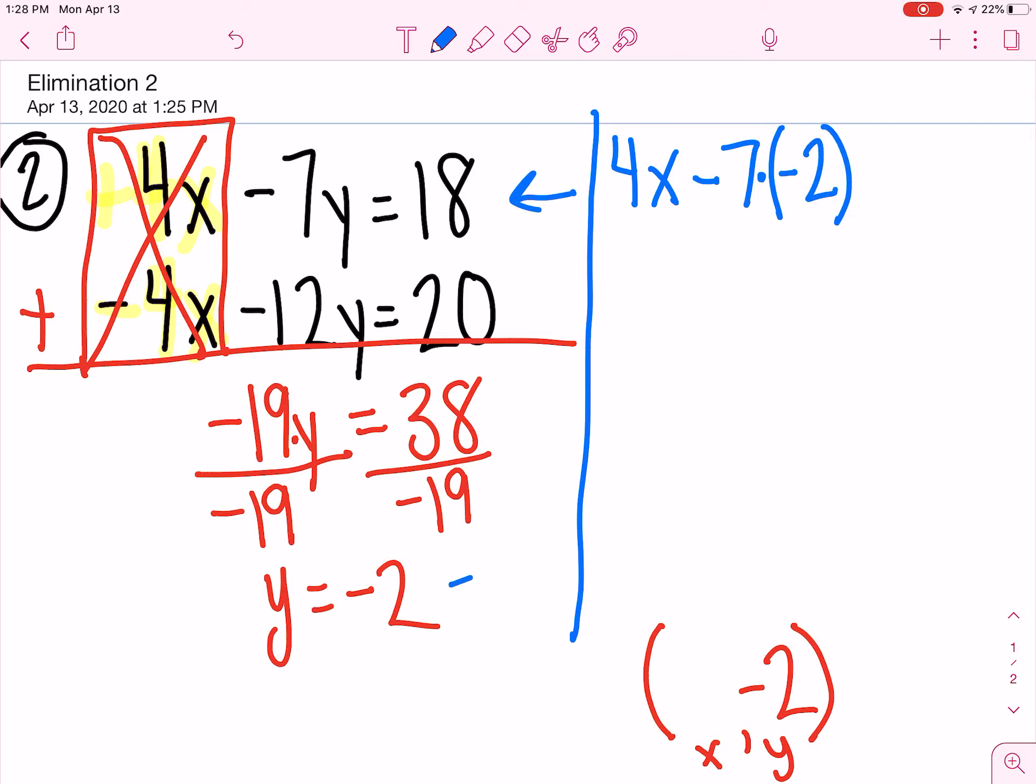I found that right here. Then, that equals 18. So, I didn't do anything to the 4X, but negative 7 times negative 2 is going to become a positive 14. Equals 18.